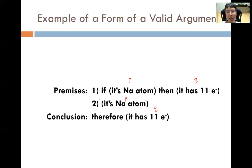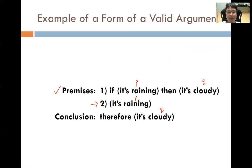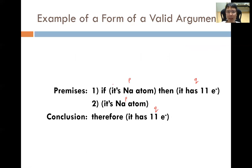If we agree Premise 1 is true and Premise 2 is true, we have to agree that the conclusion is true — there is no other way about it because it is in the form of a valid argument. A valid argument means if we agree that the premises are true, the conclusion must necessarily follow to be true. The sodium atom indeed has 11 electrons, so Premise 1 is true. And if we deduce that a particular sample is the sodium atom, we will know it has 11 electrons.